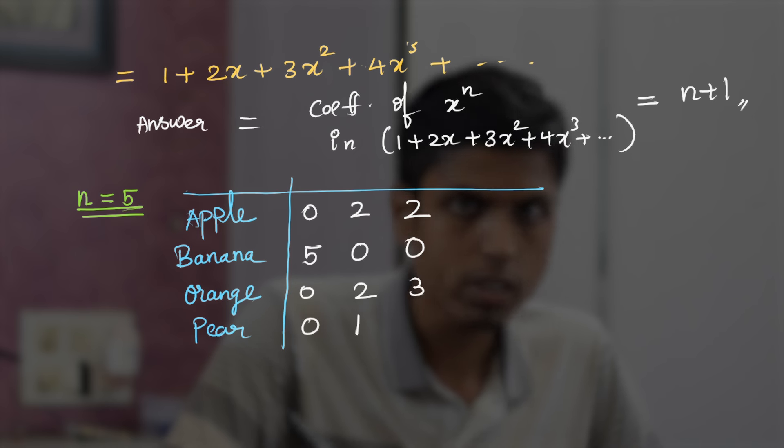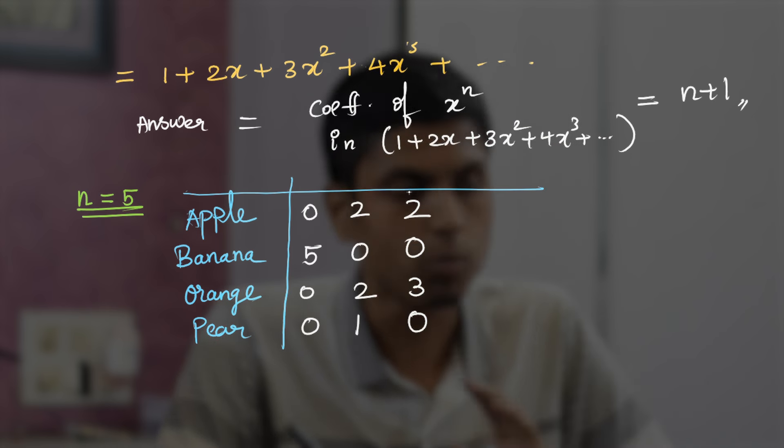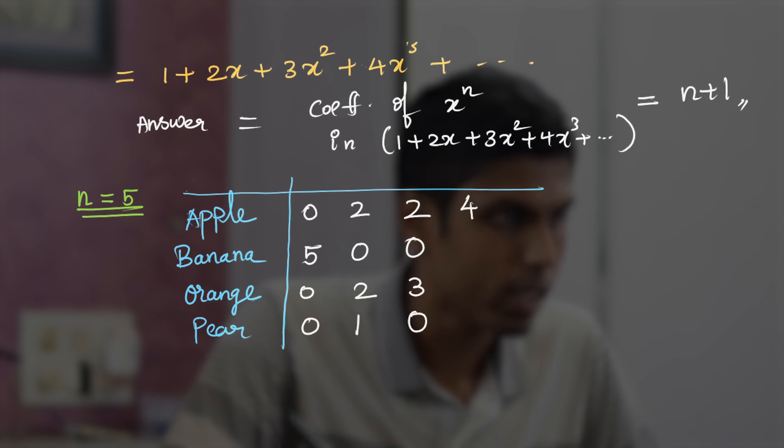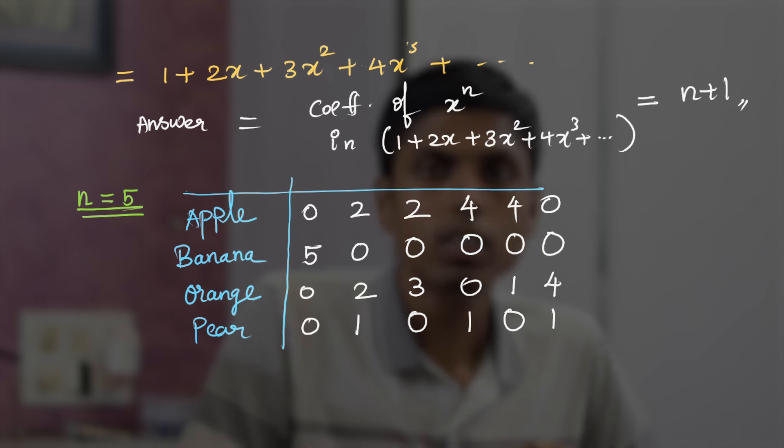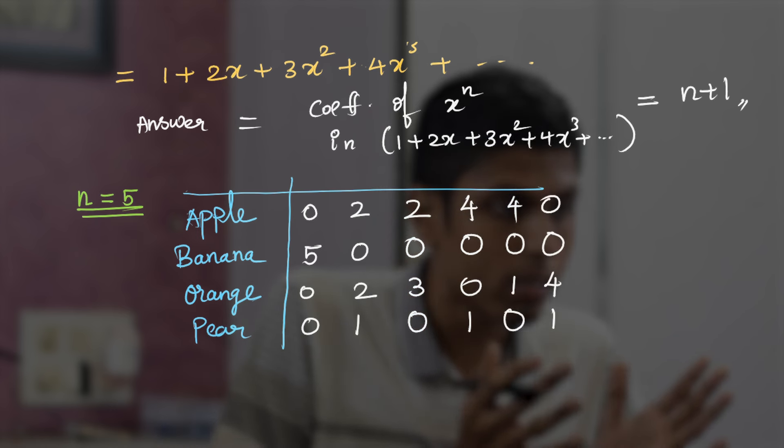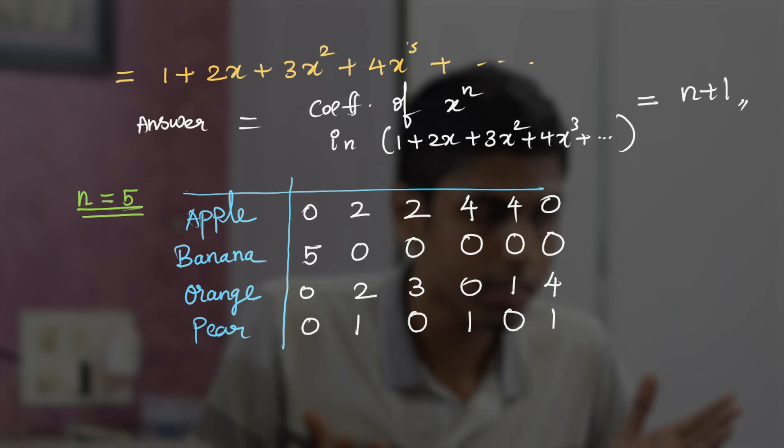Or you can have 2 apples, 0 bananas, 3 oranges with 0 pears. Now let's increase the number of apples to 4. Let's say 4 apples with 0 bananas, 1 orange. And we can also have 0 apples, 0 bananas, 4 oranges and 1 pear.